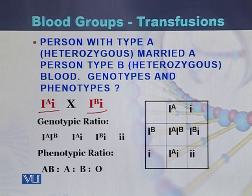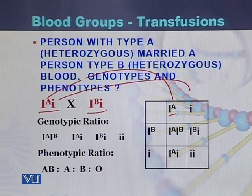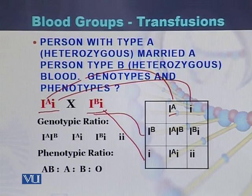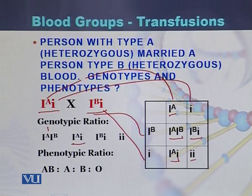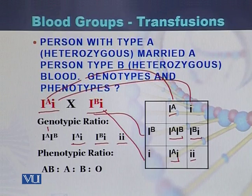The first individual has alleles I^A and I, while the second individual has alleles I^B and I. If we perform a Punnett square cross, the resulting genotypes will be: I^A I^B, I^B and I, I^A and I, and I and I. The genotypic ratio will be 1:1:1:1 between all four genotypes.